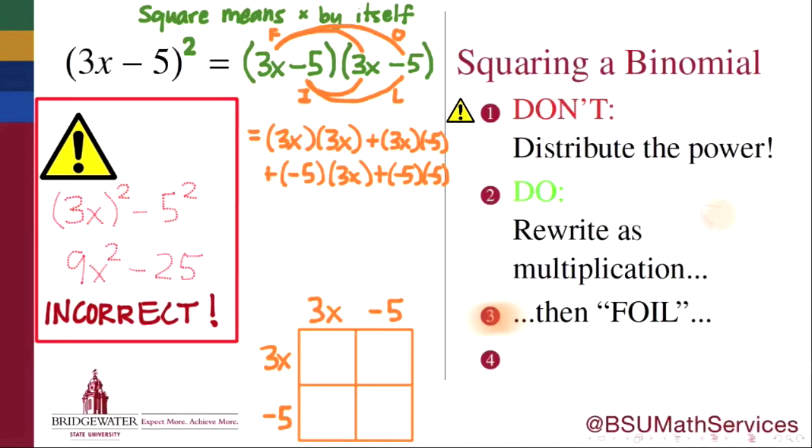Now it's simply a matter of simplifying the sum of four different terms. The 3x times the 3x gives us 9x to the power 2. Each of the 3x times negative 5s is going to give us a negative 15x, and the negative 5 times negative 5 will give us a positive 25.